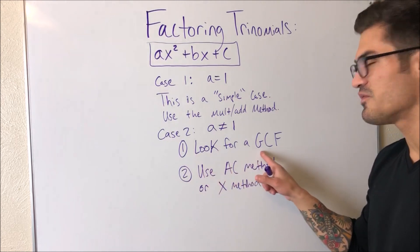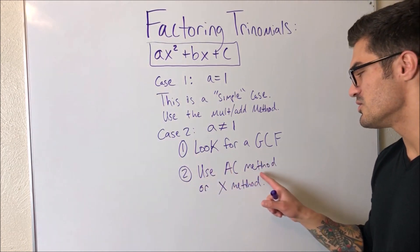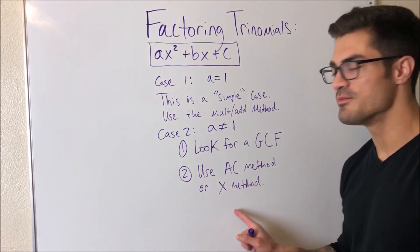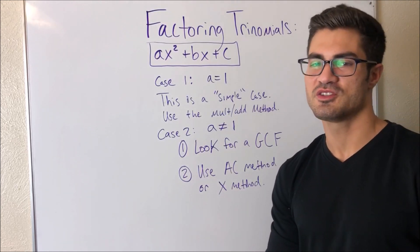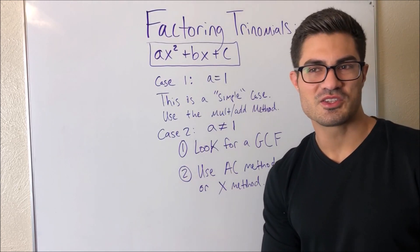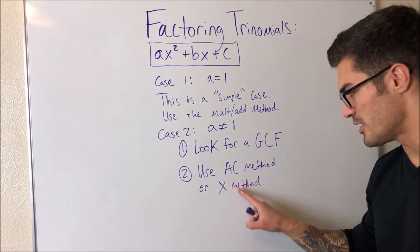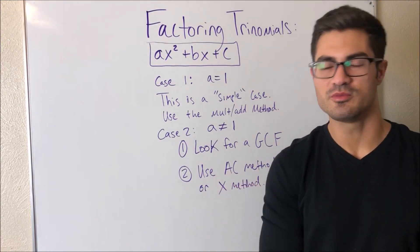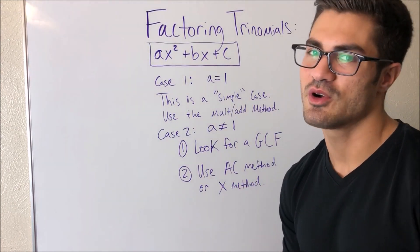And then if you can't find a greatest common factor, then you use the AC method or the X method. I think these are the two methods that are most often taught today. So I'll probably make a separate video on each of these. They're pretty similar but a little bit different. So let's go and get to our first example.